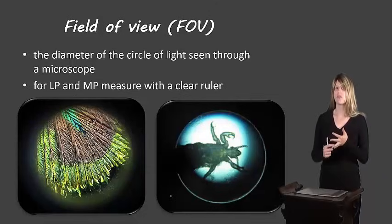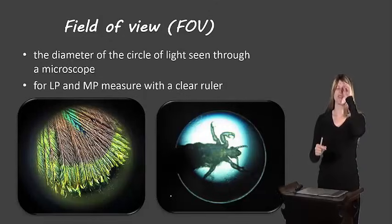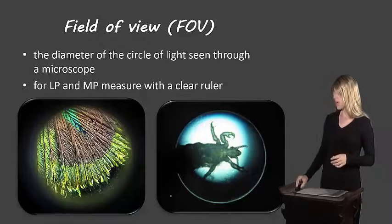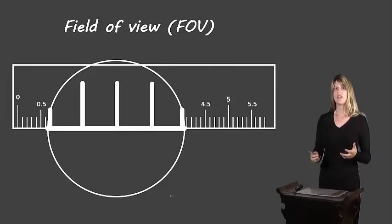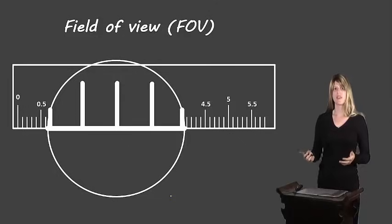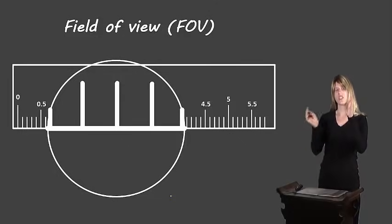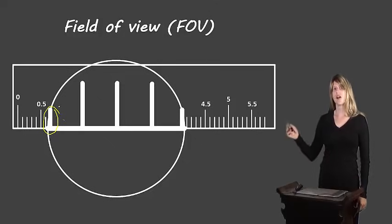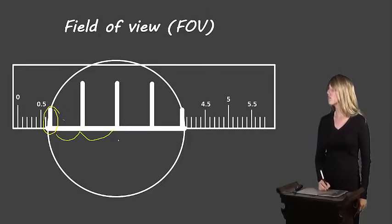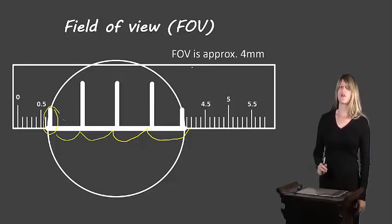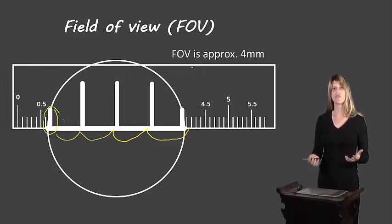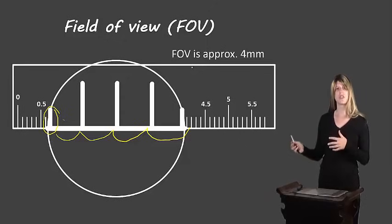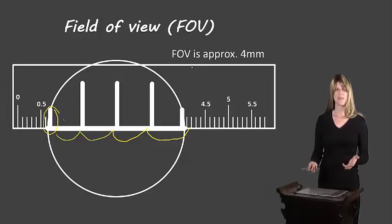For low power and often for medium power, particularly with the microscopes we use in our school, you can actually use a ruler to calculate the field of view — you just put the ruler underneath the microscope. Normally the very first notch is 0, and we count from there: 1, 2, 3, and so on. We do the same thing when calculating the field of view. We put the very first notch at the very edge of the field of view, then count across: 1, 2, 3, 4. So our field of view would be 4 millimeters, since this ruler has dashes in millimeters. This is pretty typical for low power lenses on the microscopes we use in this school.